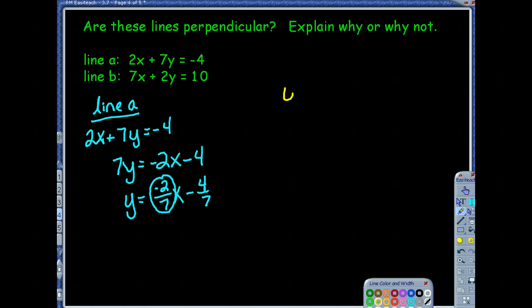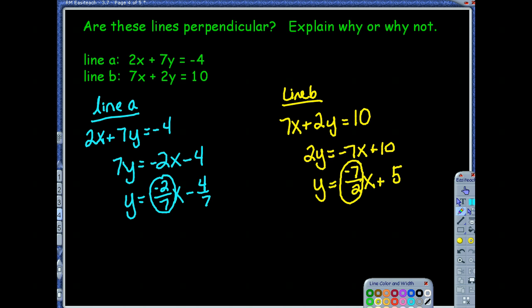So let's take a look at line B now. And line B, we had 7x plus 2y equals 10. So I'm going to subtract 7x on both sides. So I have 2y equals a negative 7x plus 10. Divide everything by 2, so I have y equals negative 7 halves x plus 5. And the only thing I'm going to look at is the slope, negative 7 over 2.